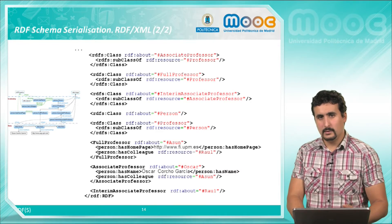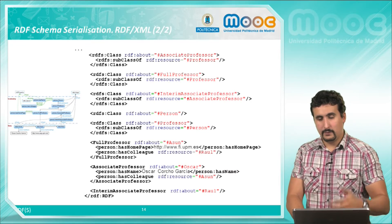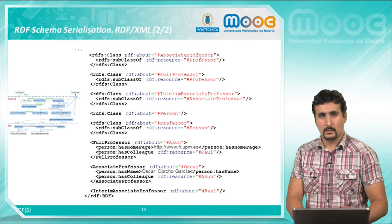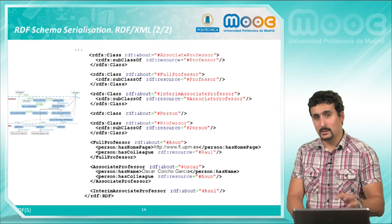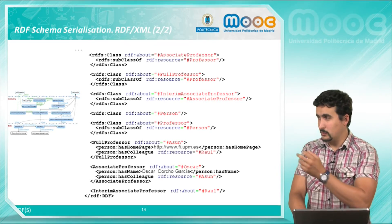As well we see here the classes for the different types of professors. And as you may notice we are using prefixes in the XML codification. We are shortening the names, we are not using the full URIs.